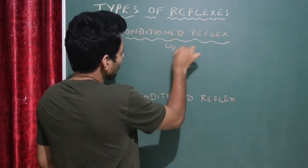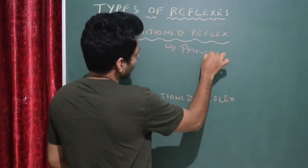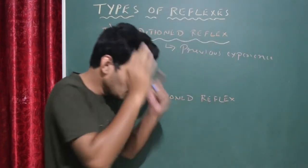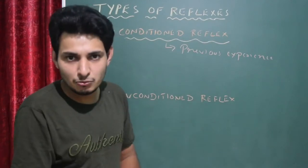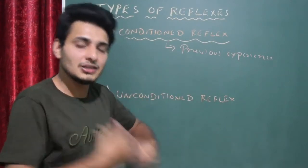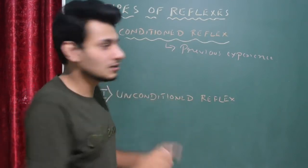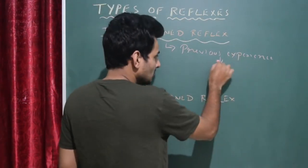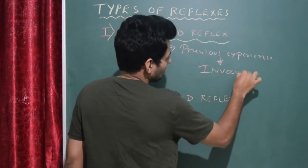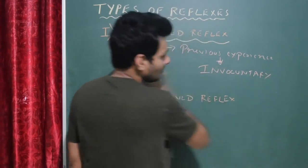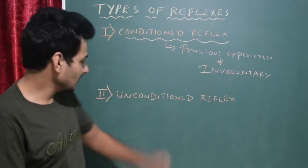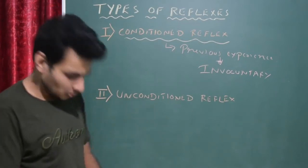That is conditioned reflex — it requires previous experience. Previous experience is a must. You have to learn a particular activity, and once you become experienced and master it, everything occurs involuntarily because of that previous experience. For example, driving a car — after learning, everything occurs involuntarily.